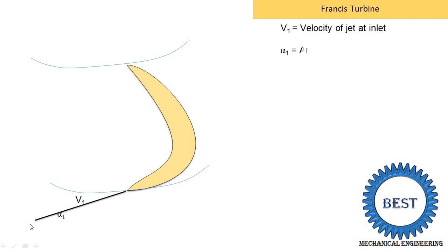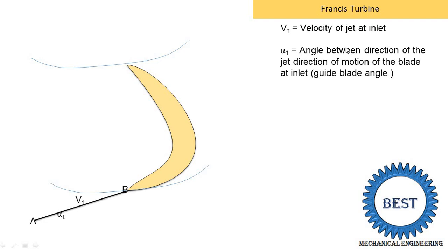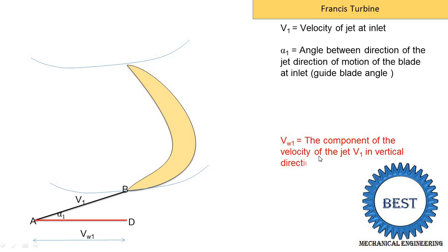This line is denoted as line AP. Alpha 1 means the angle between the direction of jet and direction of motion of the blade at the inlet, also known as the guide blade angle. Now, V1 — the velocity of the jet — is a tangential component. When the line is inclined, it is resolved into two components: one is the horizontal component and another is the vertical component. We draw one horizontal line from point A. This line is known as the velocity of whirl VW1 and is denoted as line AD. VW1 is the component of velocity of the jet V1 in the horizontal direction, not vertical.